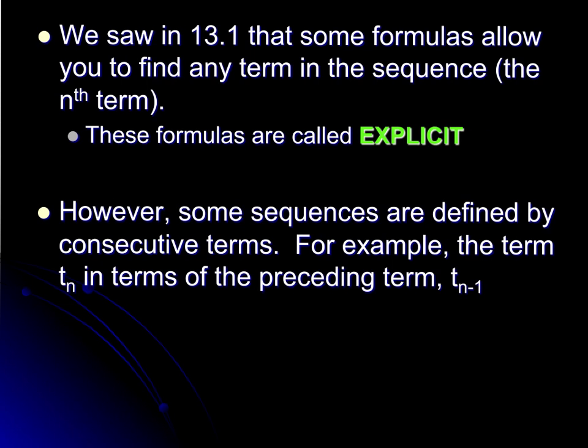In section 13.1, we worked to come up with formulas that would allow us to find any term in the sequence. Those were the explicit formulas. It was nice, we could find the 50th, the 500th, anything we wanted. Some sequences are defined recursively, which is what this section is about. It's defined in terms of the previous term, or tₙ₋₁. That's only going to allow us to find one at a time, but they are helpful in other ways.